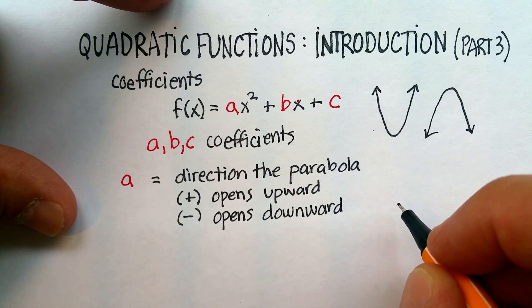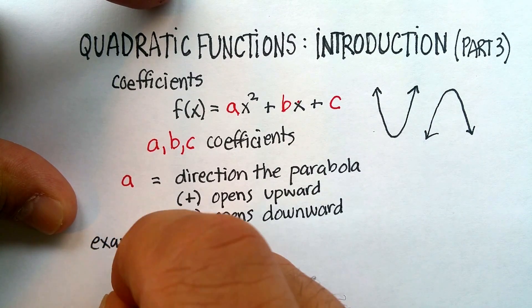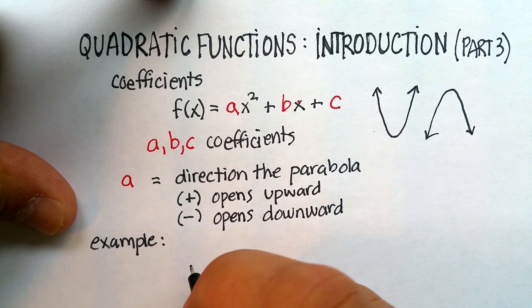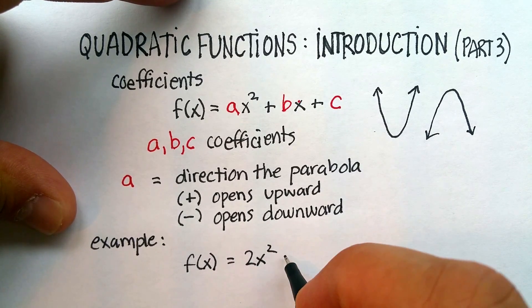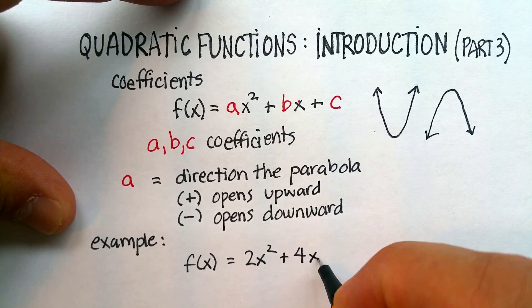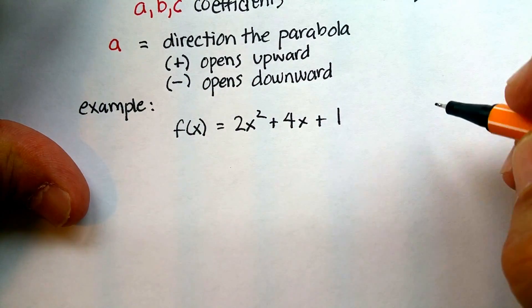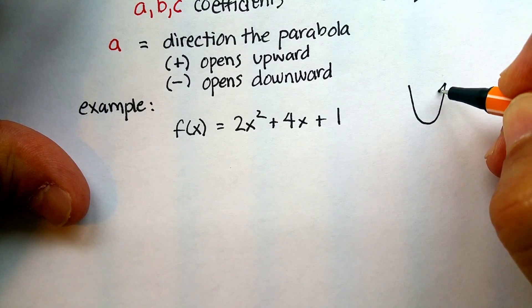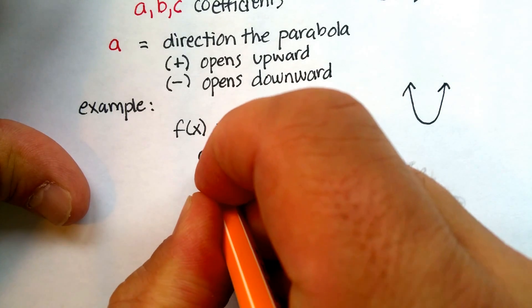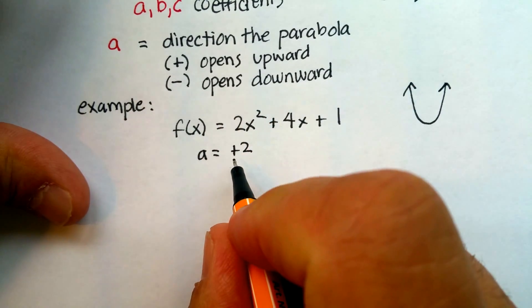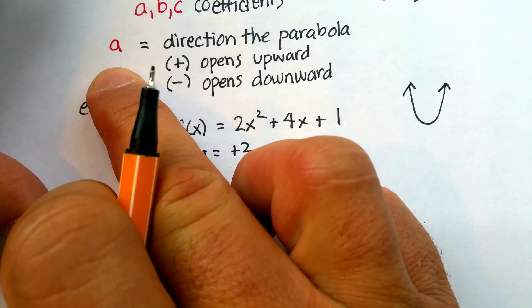Let me give you an example. If I have the quadratic function f(x) is equal to 2x squared plus 4x plus 1, I know immediately that this parabola is going to open upward in that direction because the a here is a positive 2. So, positive number opens upward. That's what the a can tell me.